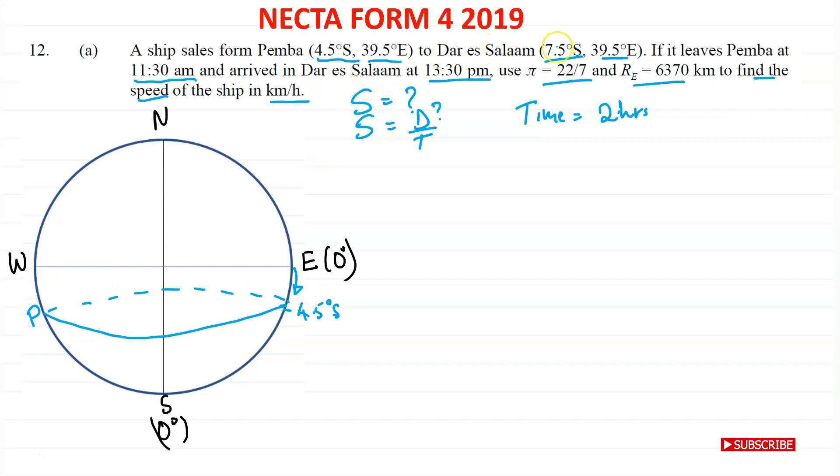And then it went to Dar es Salaam at 7.5 degrees south. Okay, so let's just use a different color for that one. So 7.5, let's say it's just there. And this is just for demonstration purpose, because we know that is more than 7.5 from the equator. I'm just showing you what it may look like. And I'm leaving a lot of space in between. So this is Dar es Salaam.